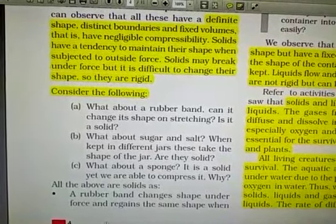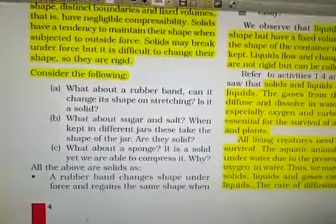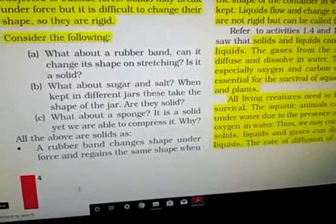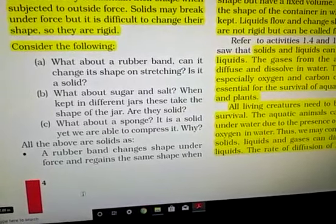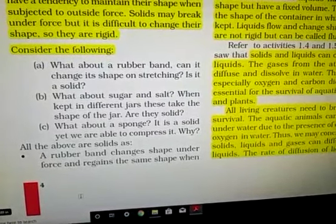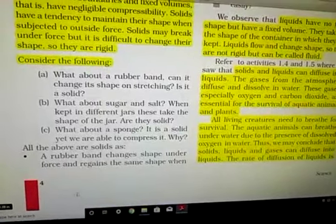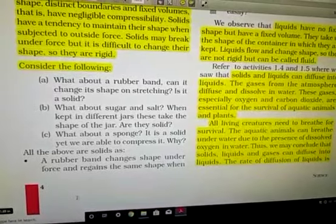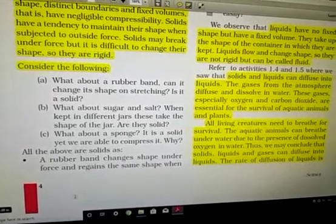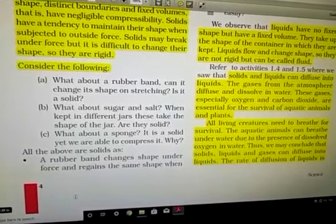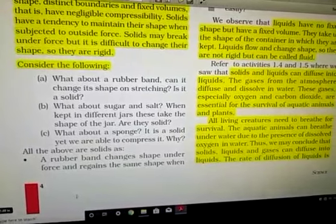Now consider the following properties of different solid materials. What about a rubber band? Can it change its shape on stretching? Is it solid? Yes, it is solid. But on stretching, it can change its shape. What is the reason? Because force of attraction among the particles is lesser. So on applying force, they can change shape. But on releasing the force, they regain their shape again.